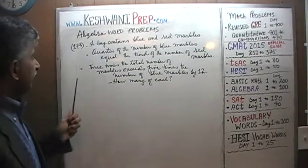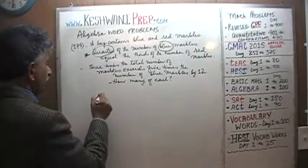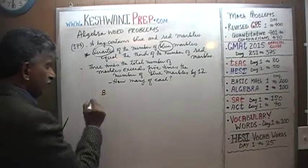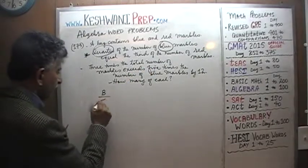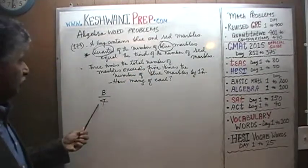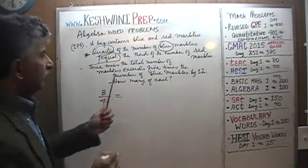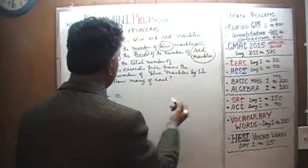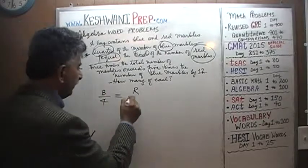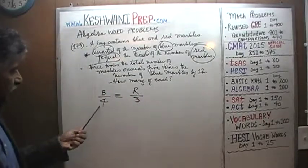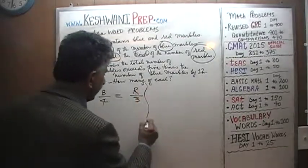The first sentence says: a quarter of the number of blue marbles equals a third of the number of red marbles. Let's represent the number of blue marbles with letter B. So B divided by 4 represents the quarter of blue marbles. That equals R divided by 3, where R represents the number of red marbles. That's our first equation.